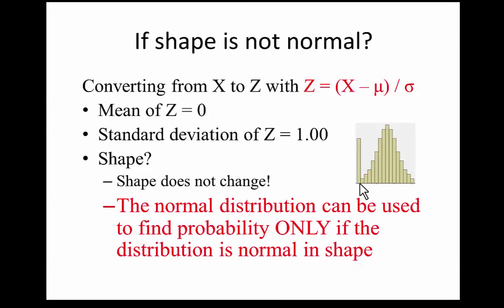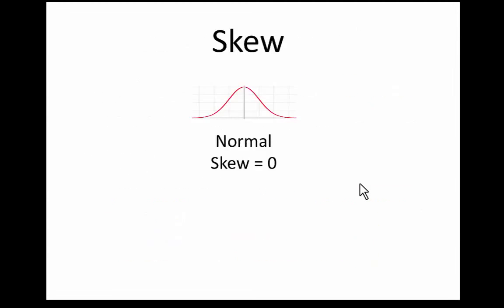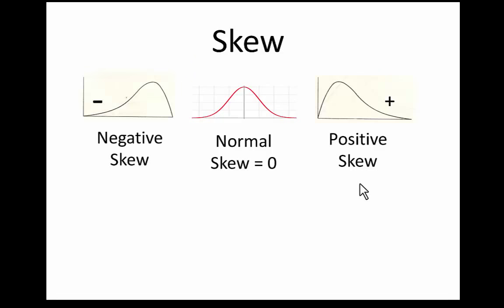How can we assess whether a distribution is close to normal? There are two common measures of shape: skew and kurtosis. Skew is a measure of symmetry — it equals 0 for a symmetric distribution like the normal distribution. For a distribution with a longer tail to the right, the skew is positive; for a longer tail to the left, the skew is negative. Sometimes these are called right-tailed or left-tailed distributions.